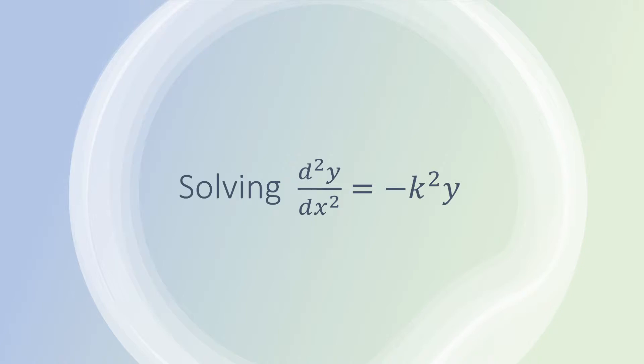In this video I will be solving this differential equation, the second derivative of some function y of x with respect to x equals negative some constant squared times that original function y.